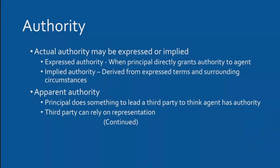Implied authority is derived from the express terms and surrounding circumstances. The terms say 'car insurance,' but we could interpret it as 'vehicle insurance.' Since the company accepted the contract for Paul's truck without feedback, the surrounding circumstances point to trucks being covered. From Paul's perspective as the buyer, the apparent authority is that he can go to Sally and get insurance for his truck — the company sent him paperwork confirming coverage.